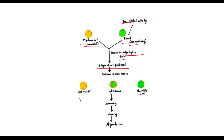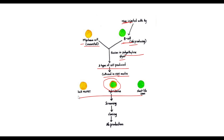These three types of cells are then cultured in HAT medium. This is the significance of the HAT medium — by applying the HGPRT principle, only hybridoma cells survive while unfused myeloma cells and unfused B-cells are eliminated.